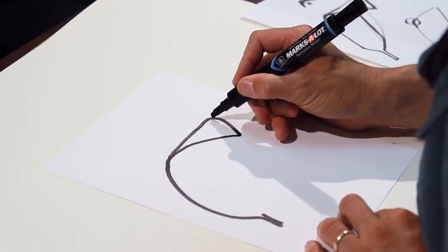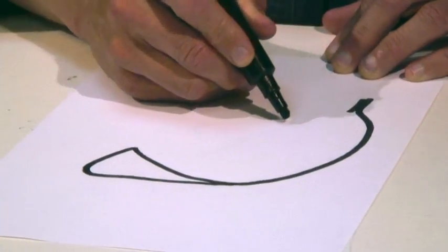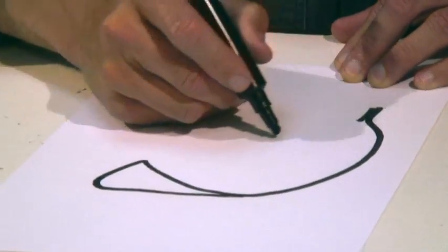Think of where this back side would naturally come around, and actually draw that with your pencil above the paper a few times.